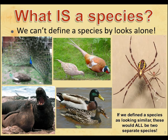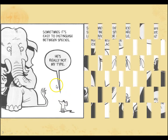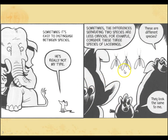So if we define a species by looking similar, all of these would be separate species. When in reality, these two are the same, these two are the same — you have to go by more than looks. Sometimes it's really easy to distinguish between species — an elephant and a mouse, clearly those are different species. Other times, you look at insects and they all look the same, but no, those are three different species. These are called lacewings.